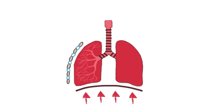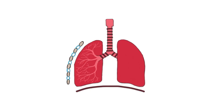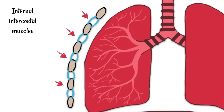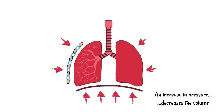By contrast, when you breathe outwards, the diaphragm will relax, which allows it to move upwards. At the same time, the internal intercostal muscles will contract while the external intercostal muscles relax, forcing the rib cage to move downwards and inwards. Altogether, there is now an increase in pressure which decreases the volume inside the thoracic cavity — we are squeezing the volume smaller and forcing air outwards.